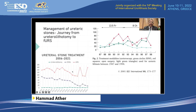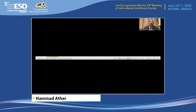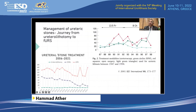Looking at later unpublished data, ureterolithotomy is really at the bottom, with hardly two to five procedures done per year. Lithotripsy was a significant number in the early 2000s, but subsequently as the scopes became finer, more ureteroscopy is done for ureteric stones. I think that's a trend all over the world.